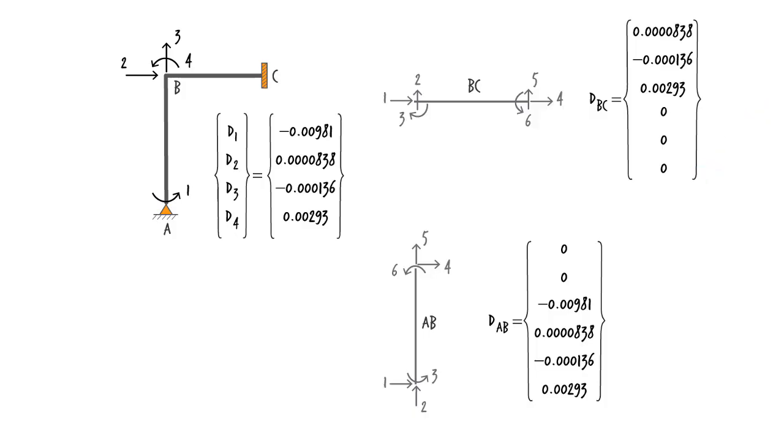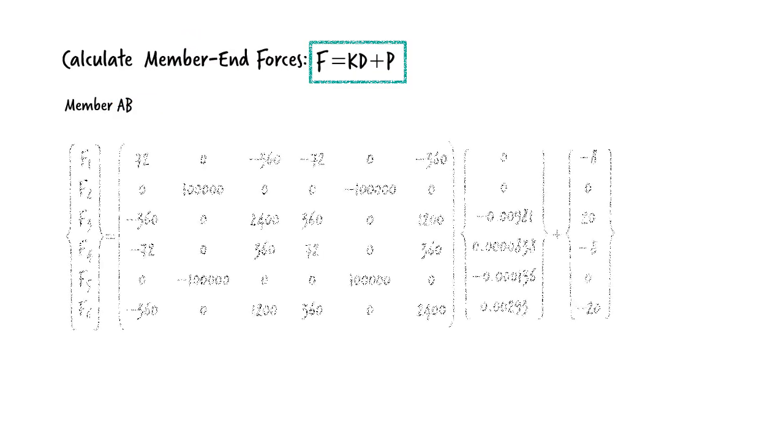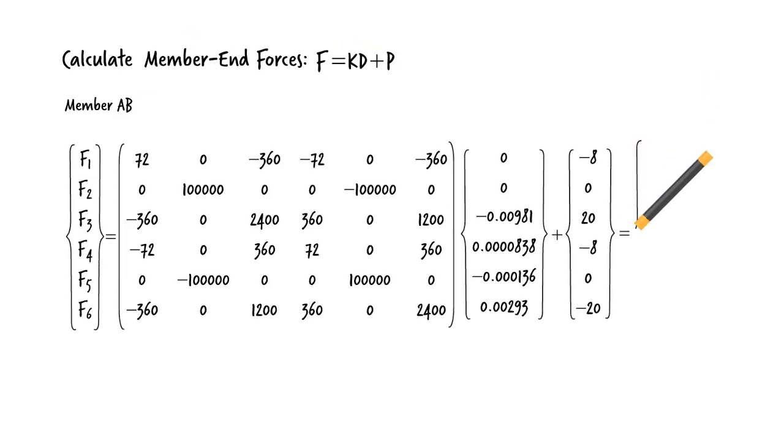Knowing the stiffness matrix and the displacement vector for each member, we can calculate its member end forces using the equation. For AB, we get the calculated forces. Here are the forces shown graphically.